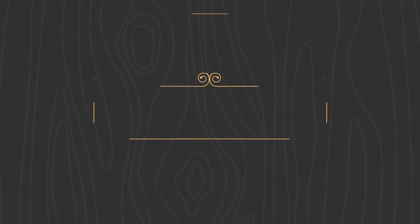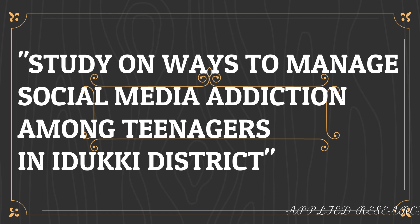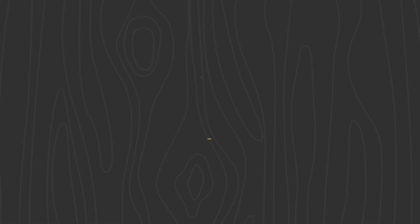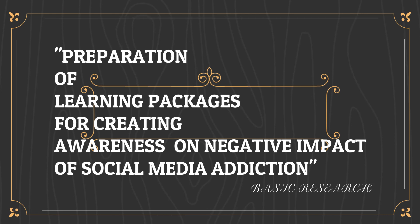Going on to the last classification of research based on outcome, there are two aspects: applied research and basic or fundamental or pure research. In applied or action research, we are solving an instant issue of society, so the title can be: 'Study on ways to manage social media addiction among teenagers in Iriki district.' In basic research, we are adding to knowledge, so the example title can be: 'Preparation of learning packages for creating awareness on the negative impact of social media for teenagers.'